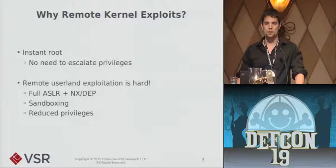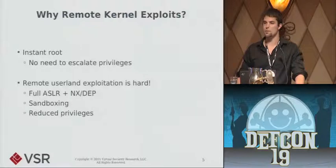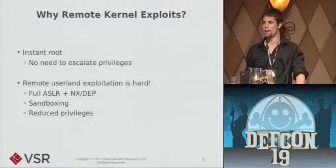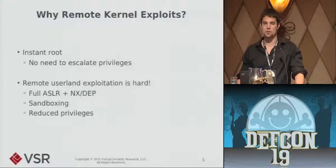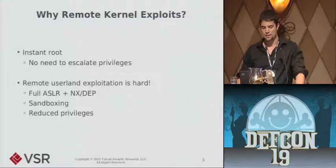Remote kernel exploits sort of speak for themselves — it's a keys-to-the-kingdom concept where you have instant remote root access to a machine you previously had no interaction with. Especially compared to client-side exploits like browsers, where you're frequently facing ASLR and NX or DEP, and sometimes a second vulnerability to bypass them. You may then be running inside a browser sandbox, as IE9, Chrome, and recently Safari provide. Escaping that may need a third vulnerability, and you may still need a fourth to escalate privileges. I prefer to skip all that.